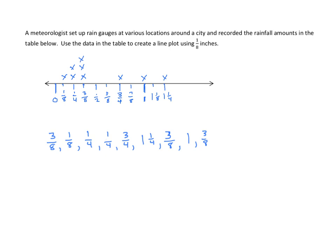Now we can look at this line plot and answer some questions about frequency. We can easily tell by looking at the line plot that the number with the greatest frequency, the greatest number of data points, is 3/8. We could also look at this easily to tell which value is the least and which is the greatest. Our least value is 1/8, and our greatest value is 1 and 1/4.